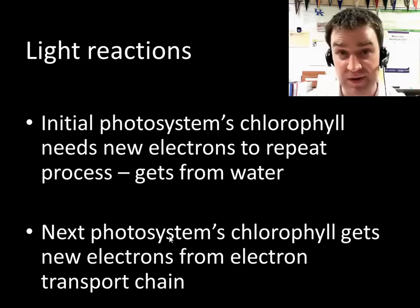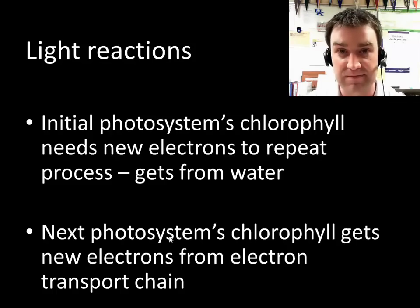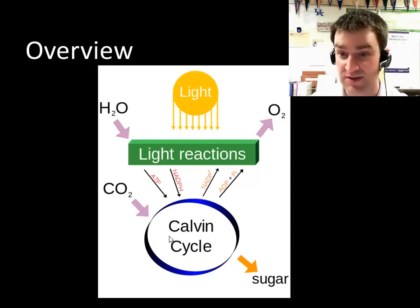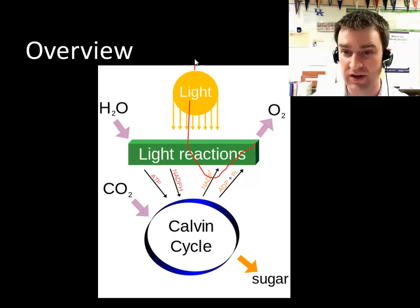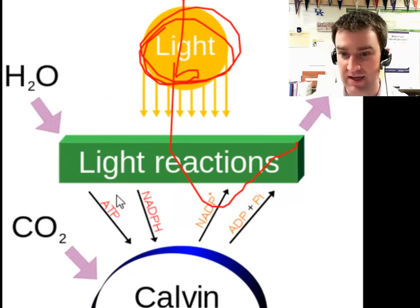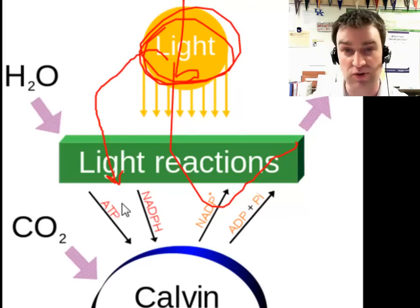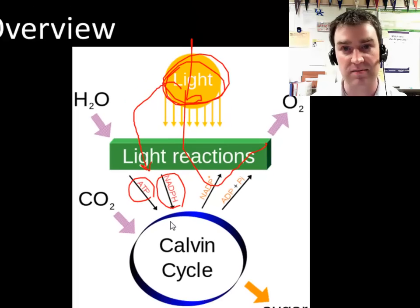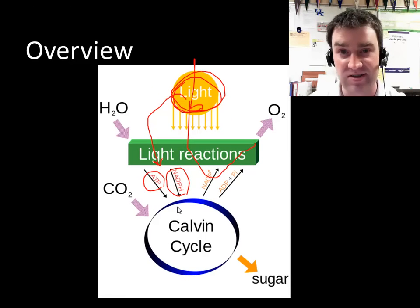The next photosystem gets its electrons from the electron transport chain. The broad goal of the light reactions is for light energy to come in and be eventually converted to two forms of chemical energy: ATP and NADPH.